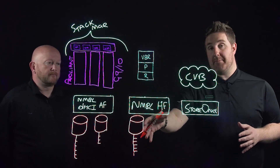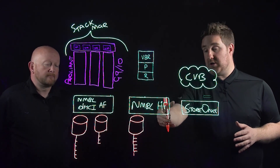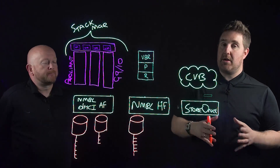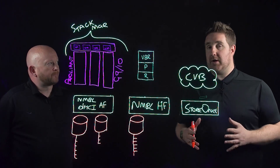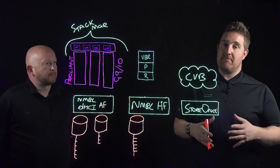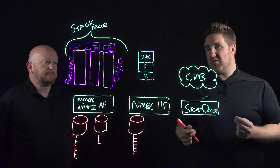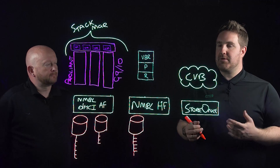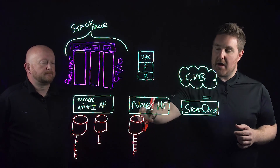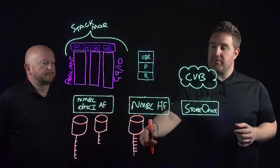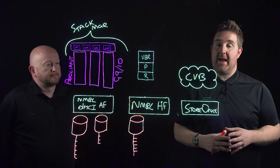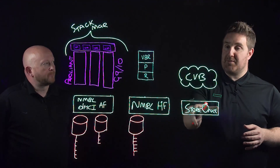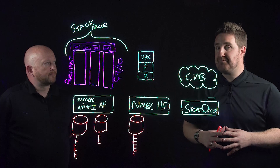I've drawn another Nimble array here which is a hybrid flash array because I'm going to be using this for secondary storage or maybe even replication workloads. I want a really good cost per gig but I still want flash-based performance for restores, and I've got some snapshots running. Finally, over here we've drawn a StoreOnce platform or even cloud volumes backup.